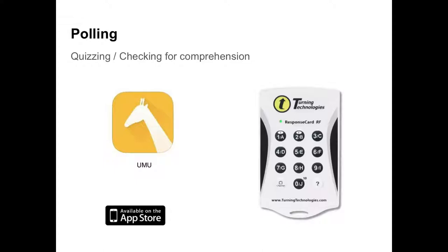Polling can be integrated in the classroom for quizzing students — giving them opportunities to practice retrieving information from a previous session — and also as a formative pause within a lesson to check for comprehension. There are many concepts in anatomy that upon first pass are really hard to understand, so it's a good strategy to pause during something like the brachial plexus and how spinal nerves network to form peripheral nerves, give a question, and ask learners to demonstrate their knowledge. My favorite platform is Uumu — it works really well as a web-based polling platform.